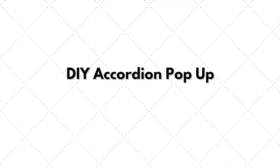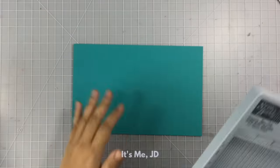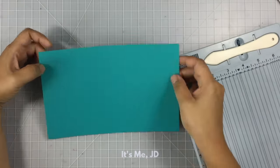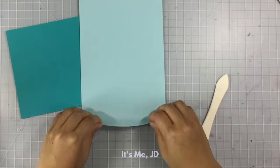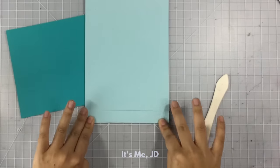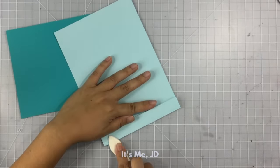The first pop-up card that we will be doing is an accordion pop-up. You're going to start off with an eight and a half by five and a half piece of cardstock that's been scored right down the middle. And then you're going to take another piece of paper and just fold it accordion style.